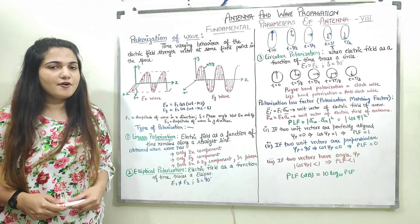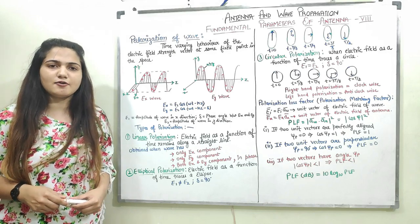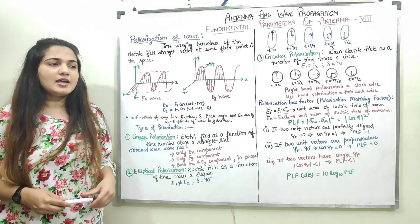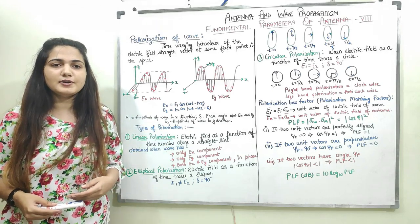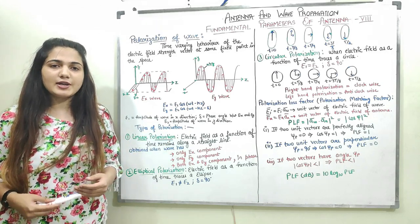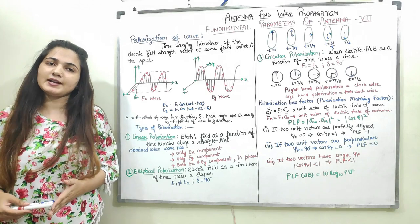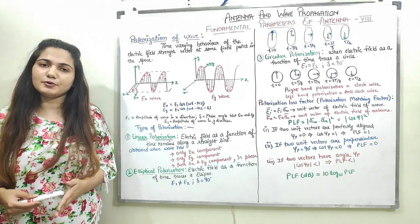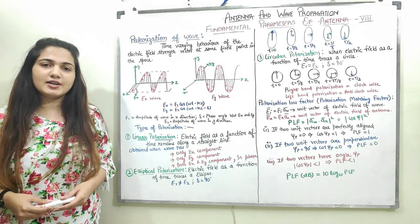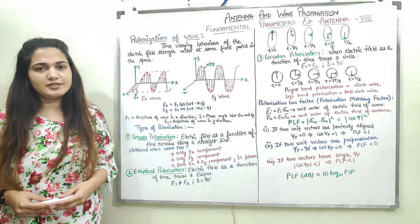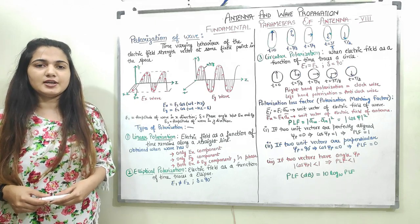A wave consists of an electric field component plus a magnetic field component. In this video, we will discuss the electric field component, but whatever we discuss is equally applicable to the magnetic field component as well. Polarization is the orientation of the electric field component.